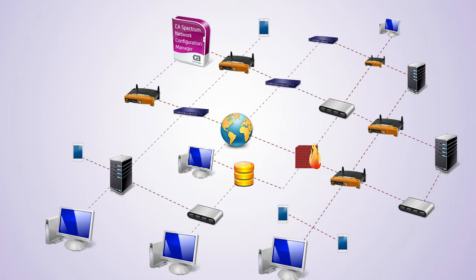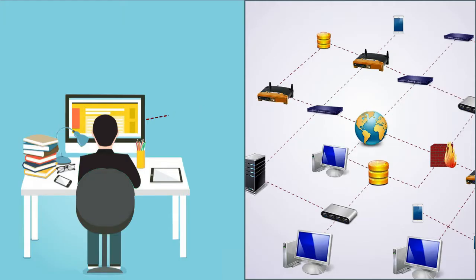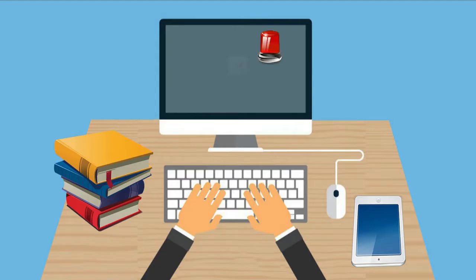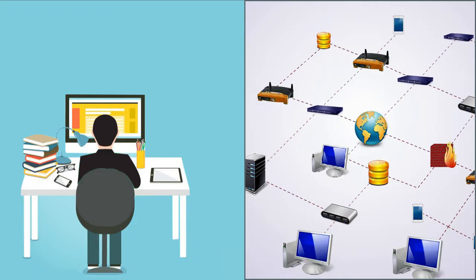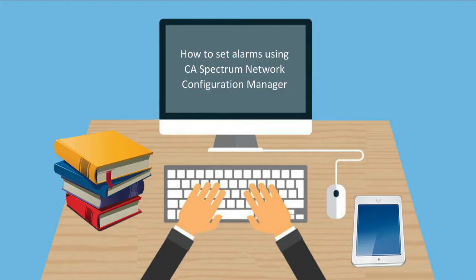They use the CA Spectrum Network Configuration Manager, which allows them to capture, modify, load, and verify configurations for thousands of multi-vendor devices. In addition, it allows administrators to set alarms. An alarm is generated if there is any change in the configuration. This enables administrators to view and compare the differences for a single device. They can even create policies to monitor content for a device configuration. Devices that violate the policy can generate an alarm and receive remediation. Let's view a quick demonstration on how to set alarms using CA Spectrum Network Configuration Manager.